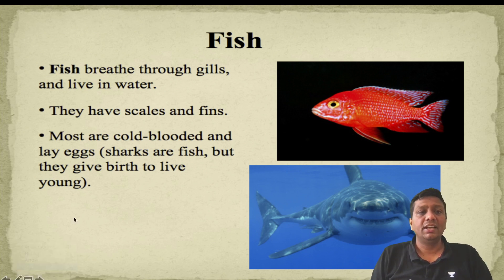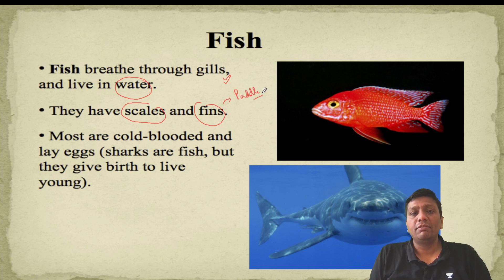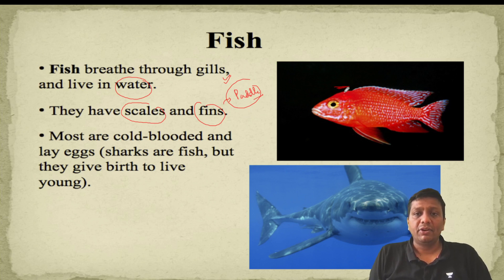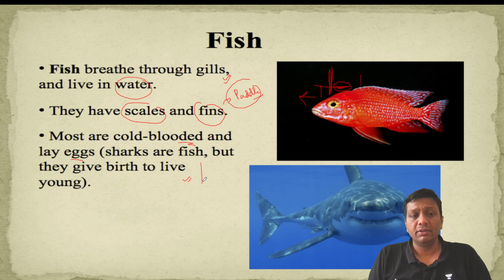Regarding adaptations of fishes: they live in water bodies and breathe through gills. Their bodies have scales and fins — fins work as paddles, helping them move anywhere. Their head and back are jointed with no neck, so there is no disturbance when they move. Mostly they are cold-blooded and lay eggs. Sharks are fish but they give birth to live young — so some exceptions exist in the case of fishes.